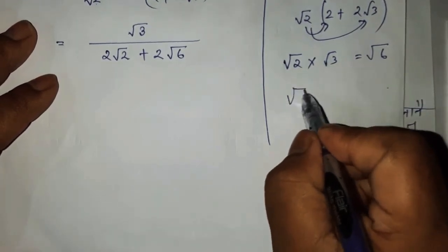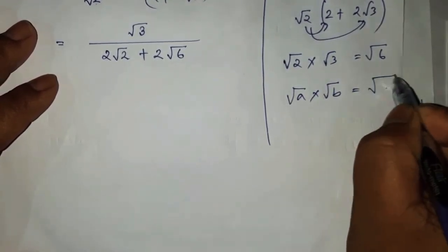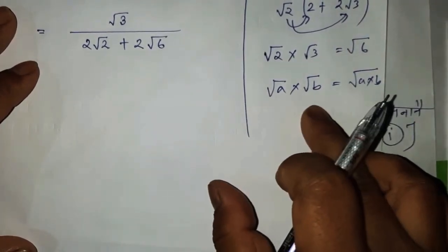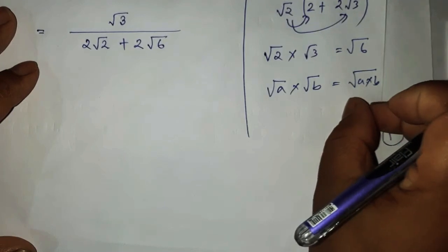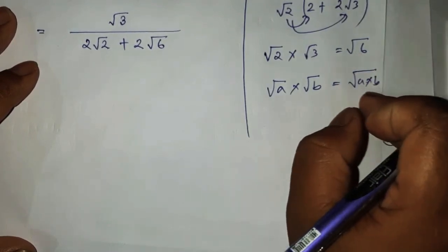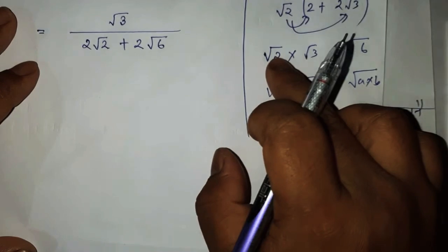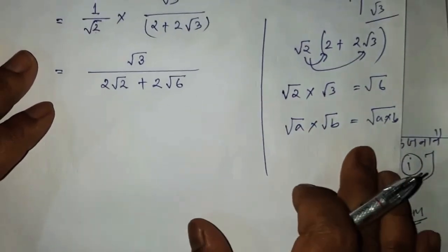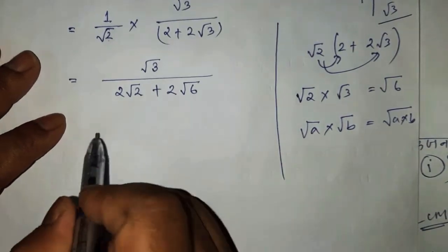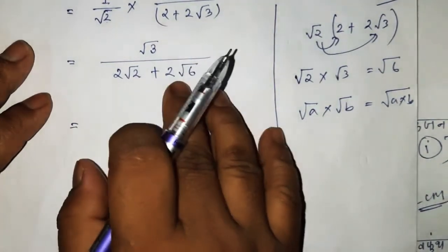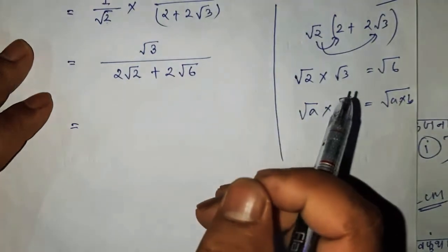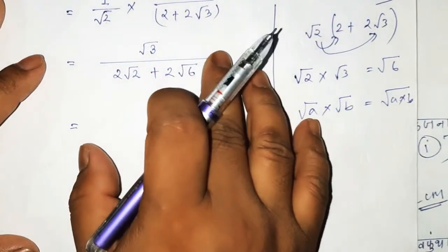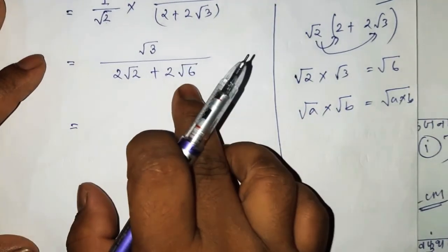If you consider the formula of class 9, you will have a formula that will involve multiple multiplication. It will be 2×3, so it will be 6. If you have a problem with root 3, you can see that it is 2 root 2 plus 2 root 6.